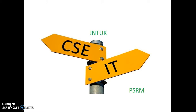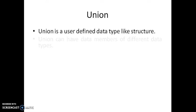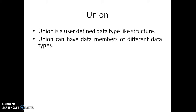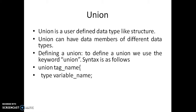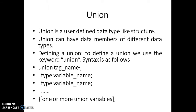Welcome to my YouTube channel on C programming. In this video let us discuss about unions. A union is a user-defined data type like a structure. Unions can have data members of different types, exactly like structures. To define a union we use the keyword union. The syntax is: union followed by a tag name, then data members each with a data type and variable name, and we can close at the end.